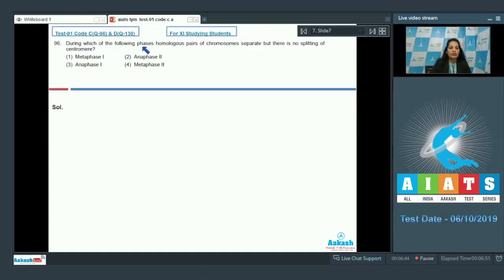Question number 96: During which of the following phase do homologous pairs of chromosomes separate but there is no splitting of centromere? Metaphase one is the alignment of chromosomes at the equatorial plate. Metaphase two has no splitting of centromere. In anaphase one there is separation of homologous chromosomes but no splitting of chromosomes, and in anaphase two there is splitting. In anaphase one there is separation of the homologous chromosomes but there is no splitting of the centromere. In anaphase two there is splitting of the centromere.